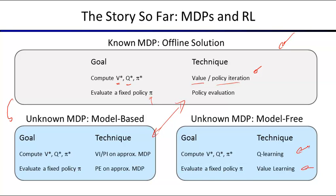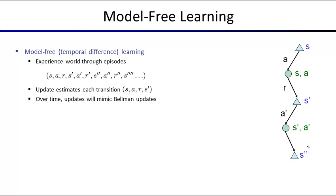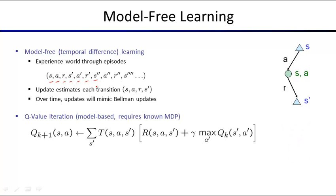Q learning finds Q star. You have a sequence of state, action, reward, next state, and so forth. At every transition you update your estimate of the Q value function, similar to Bellman equation updates. Starting from Q value iteration with a known model, we instead run updates based on samples.